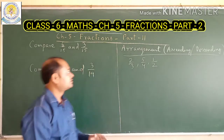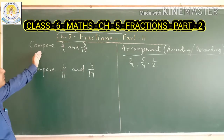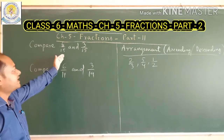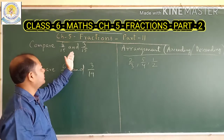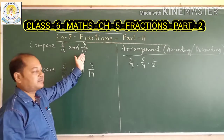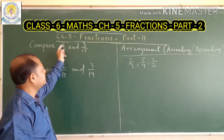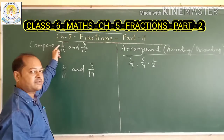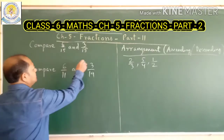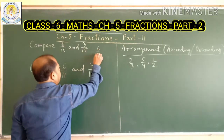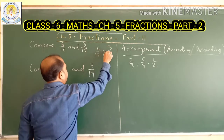So let's start. The first question says: compare 6 upon 15 and 3 upon 15. We know that whenever the denominators are same, the fraction having the highest numerator is the greatest fraction. So here, 6 upon 15 is greater than 3 upon 15.